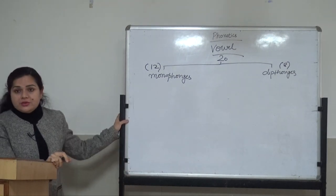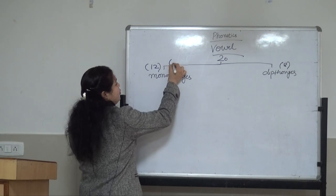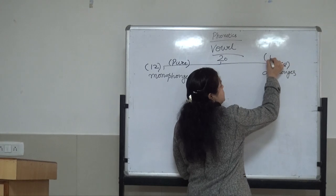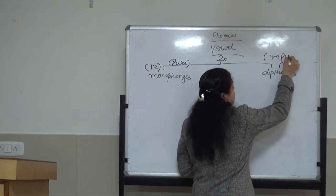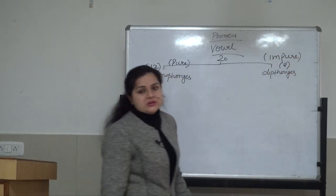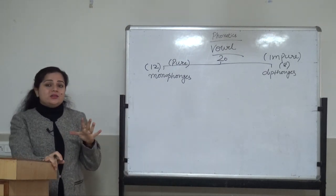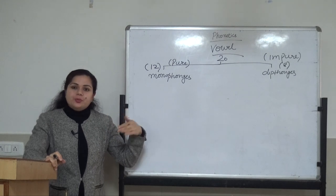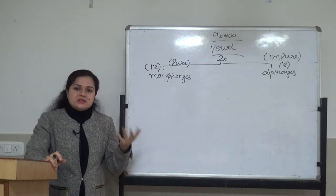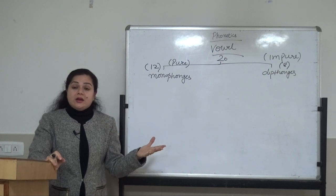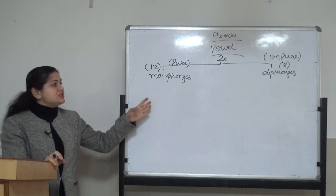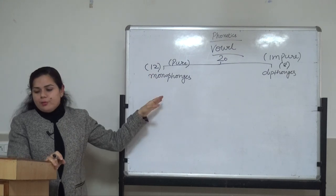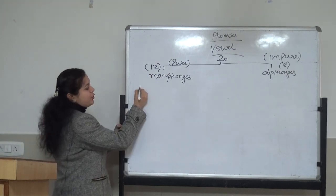Mono means single and di means two; thong means sound. Monophthong is made up of a single sound and single symbol. Diphthong is the combination of two things. Monophthongs are also known as pure vowels — one sound, one symbol. They are also known as impure vowels. We are studying very basic concepts of Phonetics right now.